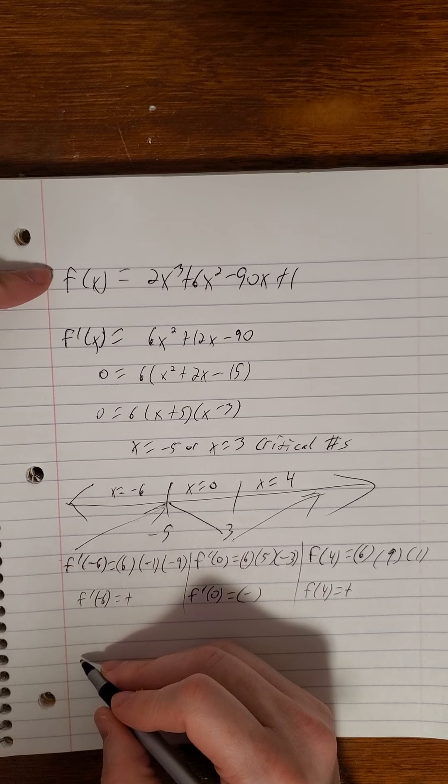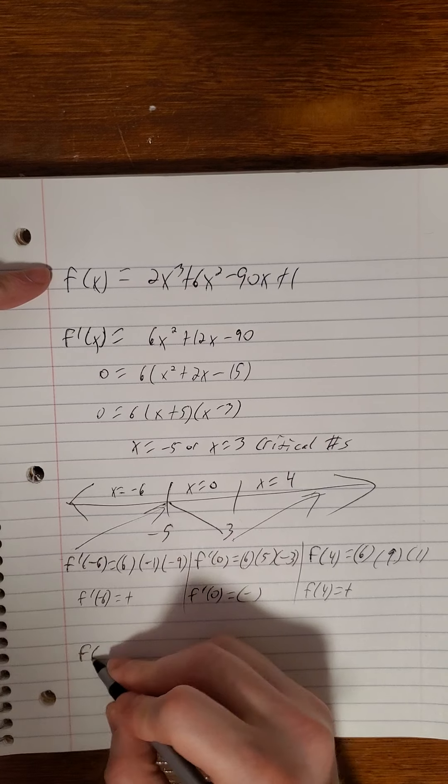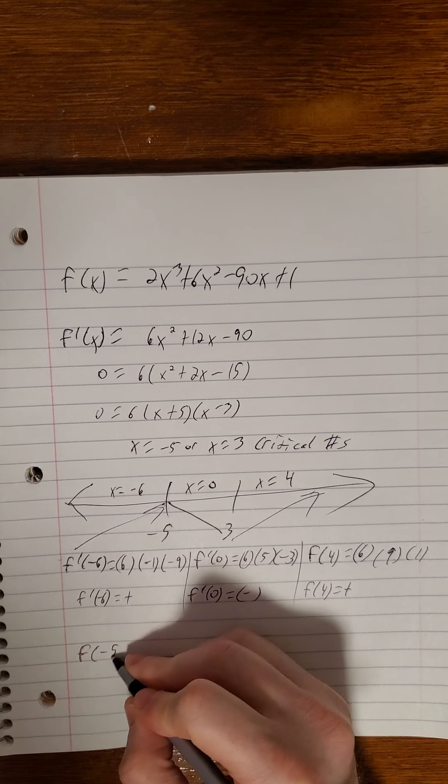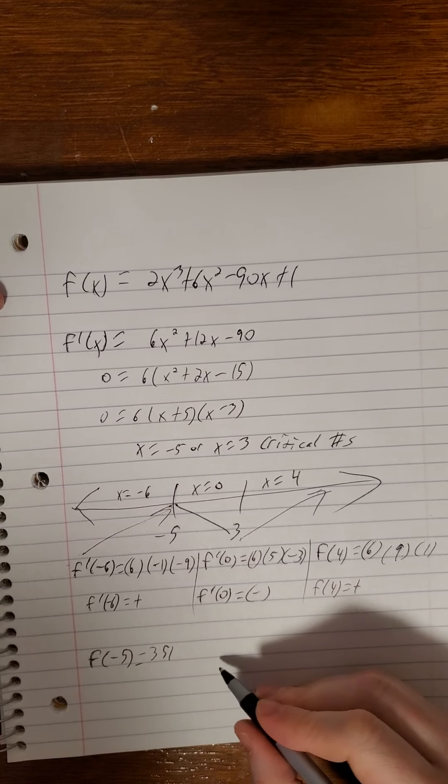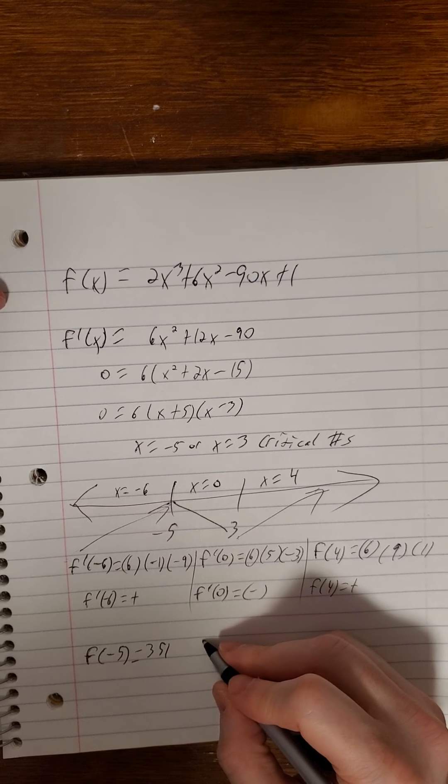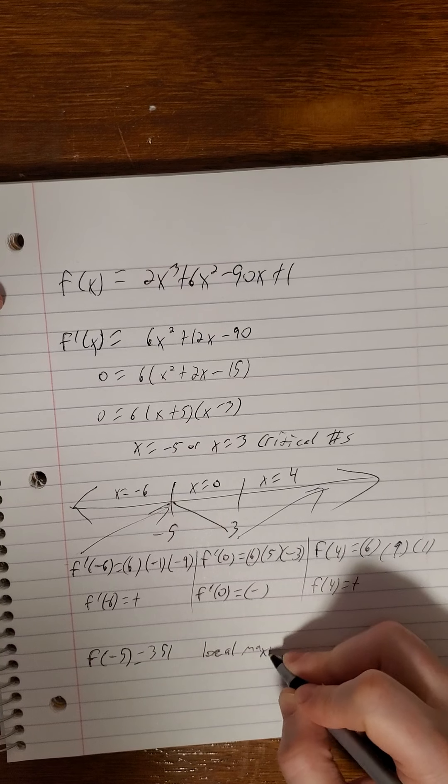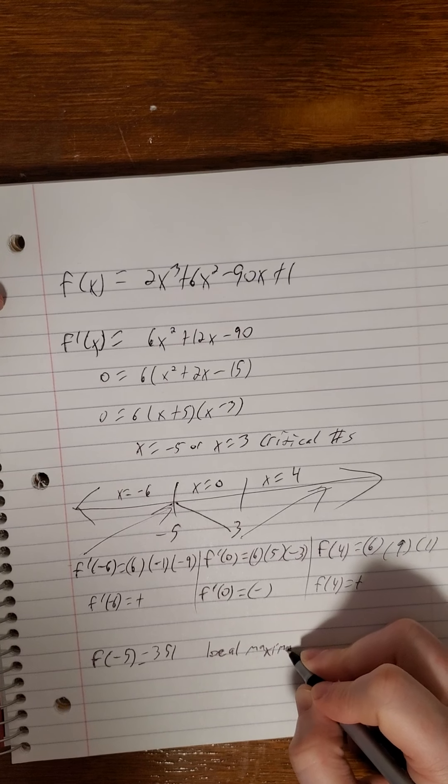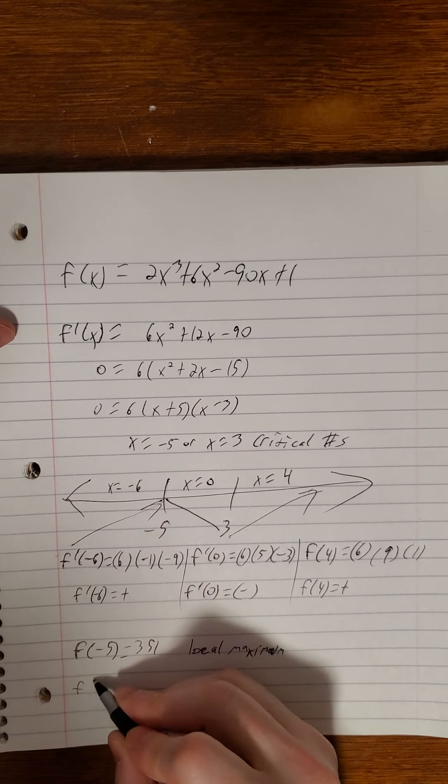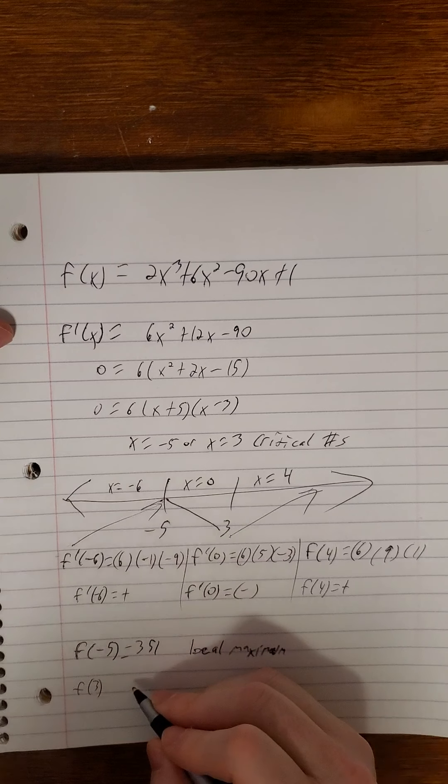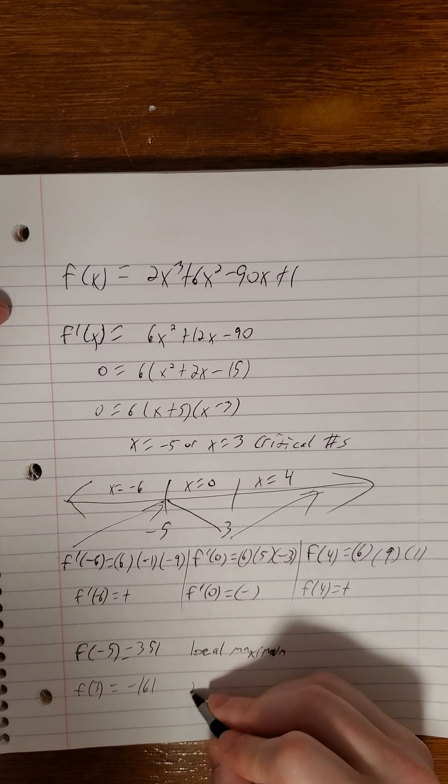So then to find out what ordered pairs we have for local extrema, we go back into the original. So f of our critical number negative 5, that one turns out to be 351. So that is a local max. And f of our other critical number 3, f of 3 was negative 161. And that is a local min.